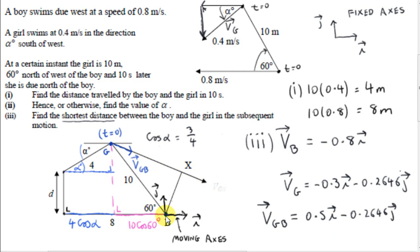Then G will appear to move in this direction. So, as seen by the boy, the path of the girl is along here. And we want the shortest distance between the boy and the girl. So at some time, the girl will be here. And this line is perpendicular to this line. So we want this distance here, the shortest distance of this point to the path of the girl.